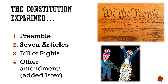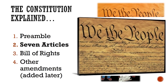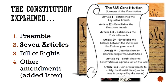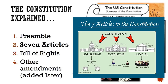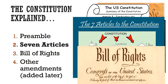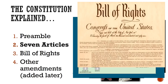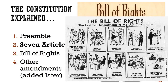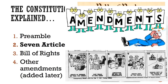The U.S. Constitution is divided into four parts. You already know the first part — the preamble — which you are memorizing with our preamble song. The second part is the largest and includes seven articles, which explain the three branches of government and lay out what the government can and cannot do. The third part is the Bill of Rights, the first ten amendments, which list our freedoms and rights as citizens that cannot be taken away. These were passed during the first few years of our government. The last part consists of the other amendments added over time.